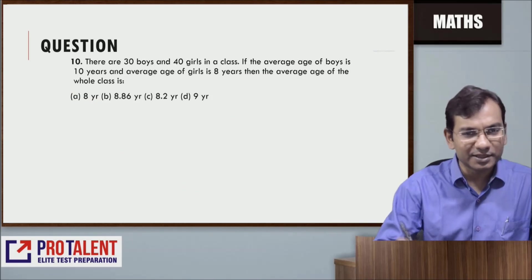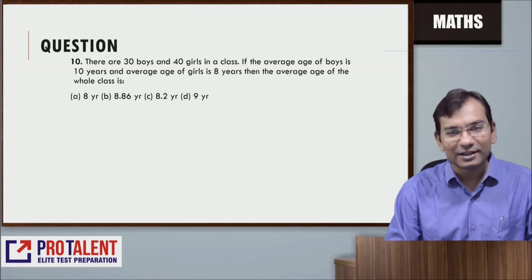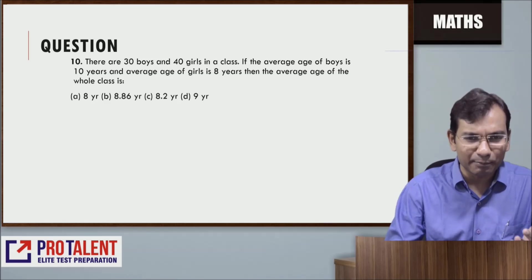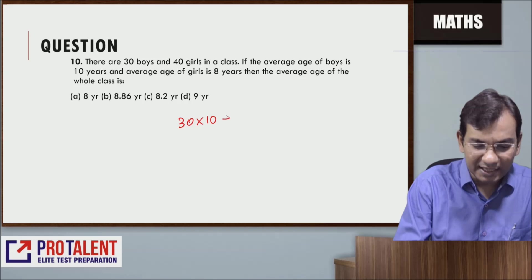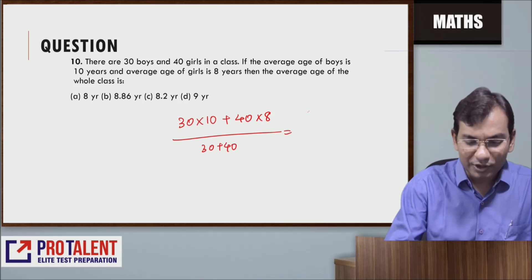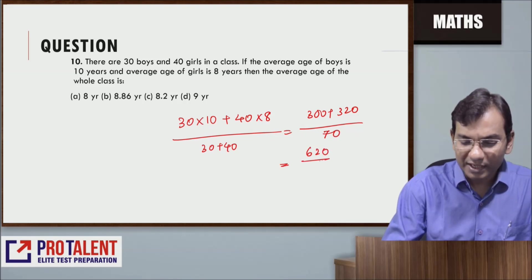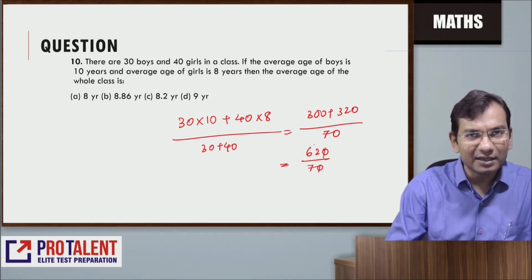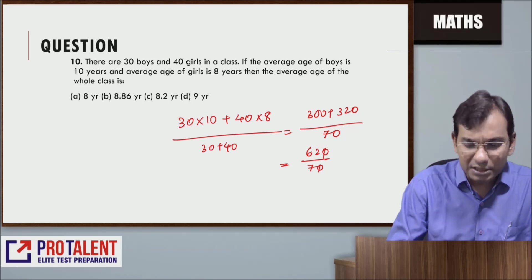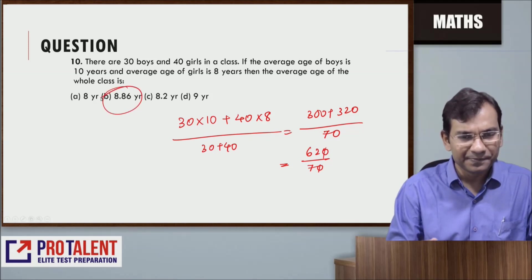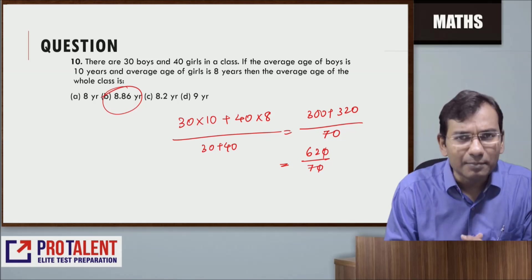Question number ten: There are 30 boys and 40 girls in a class. If the average age of boys is 10 years and average age of girls is 8 years, what is the average age of the whole class? 30 boys with average 10, 40 girls with average 8. Total is (30 × 10 + 40 × 8)/(30 + 40). That's (300 + 320)/70 = 620/70. 70 × 8 is 560, leaves 60. 60/70 simplifies. So we get approximately 8.86 years as the answer.